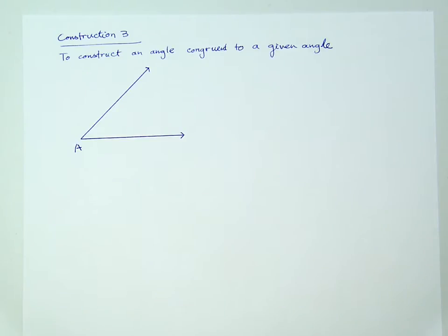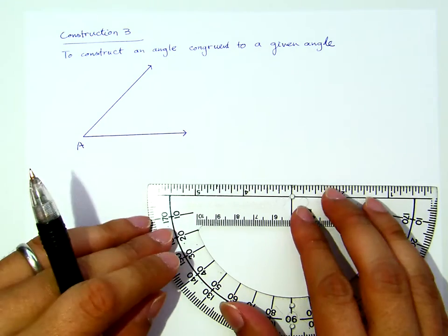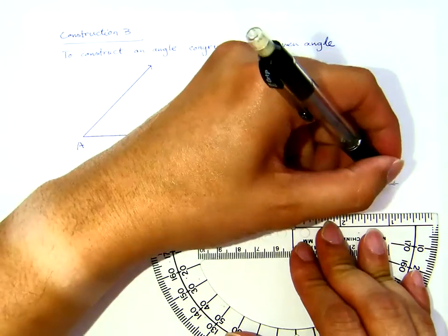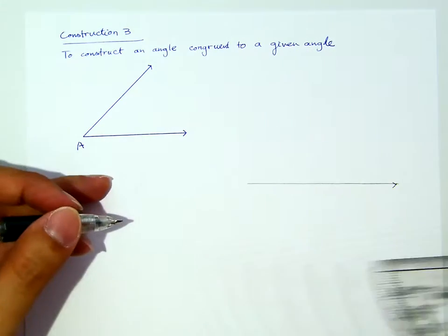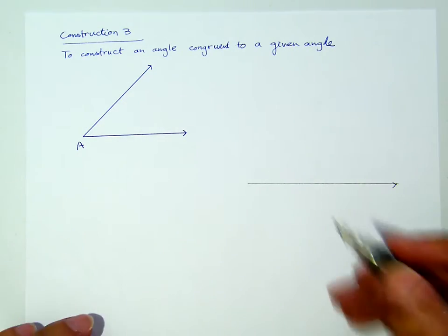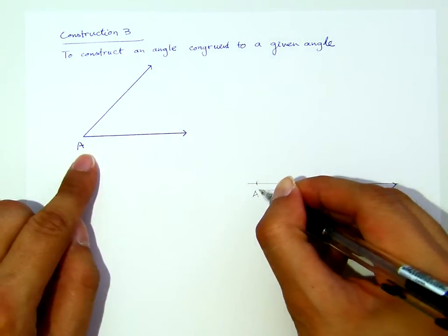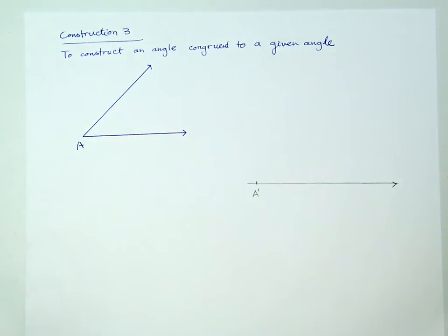What I will do is construct an angle congruent to this angle A. First, I will construct a ray, and pick a point on this ray that corresponds to point vertex A there. Let me call this A' that corresponds to that vertex A.